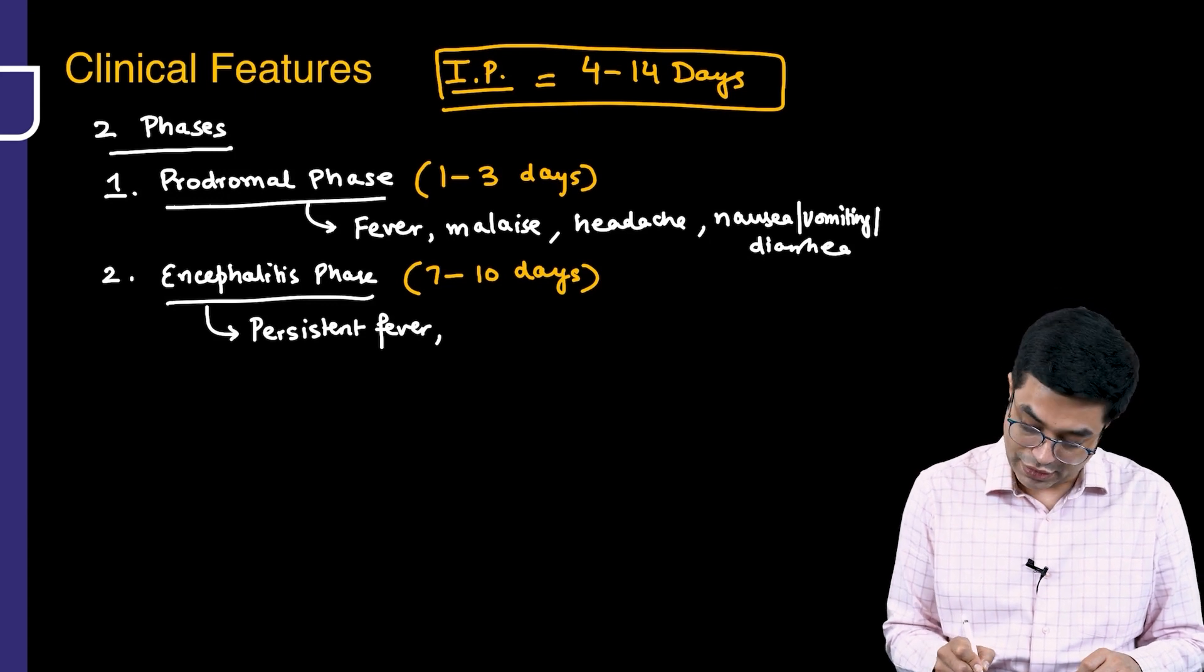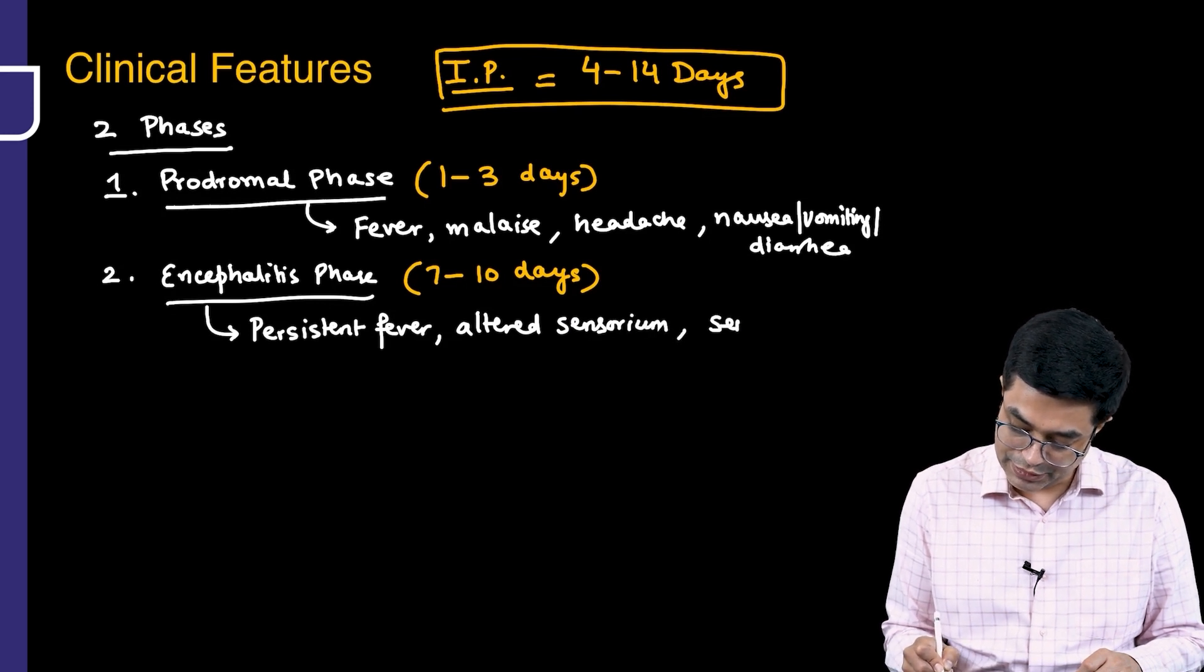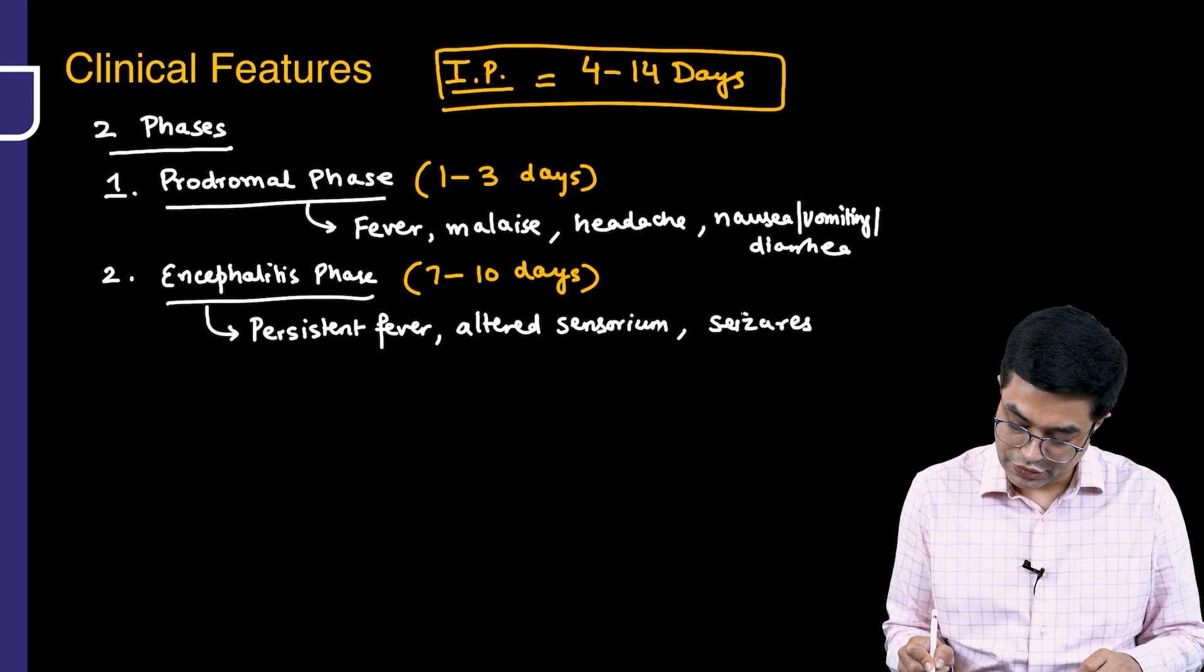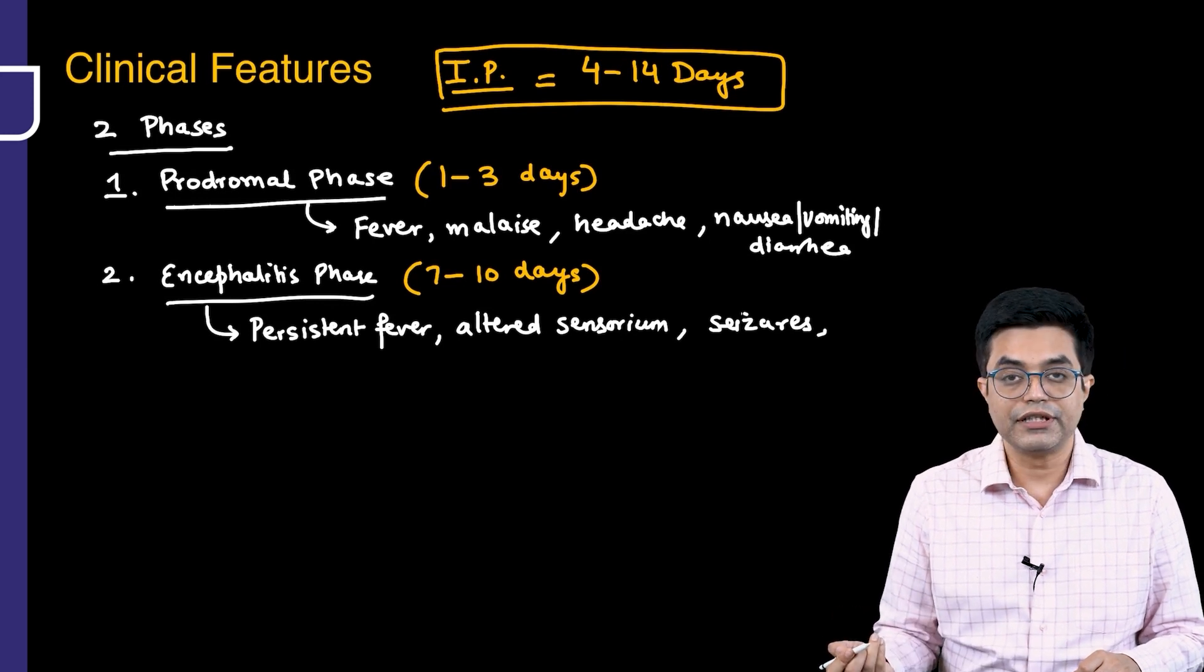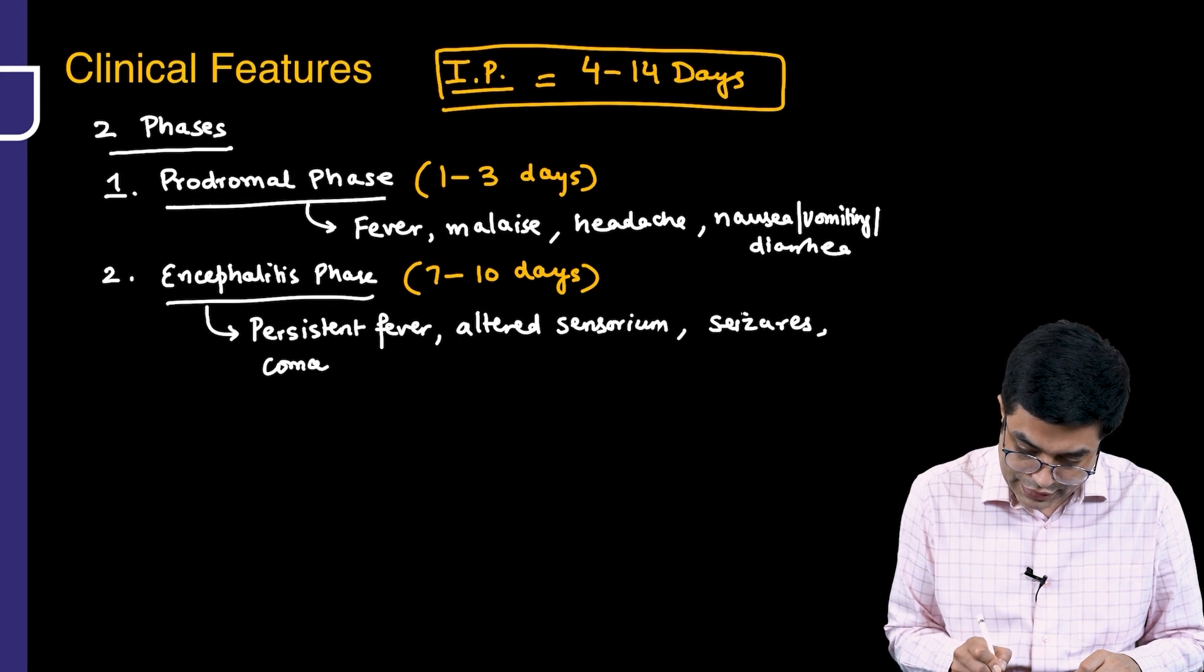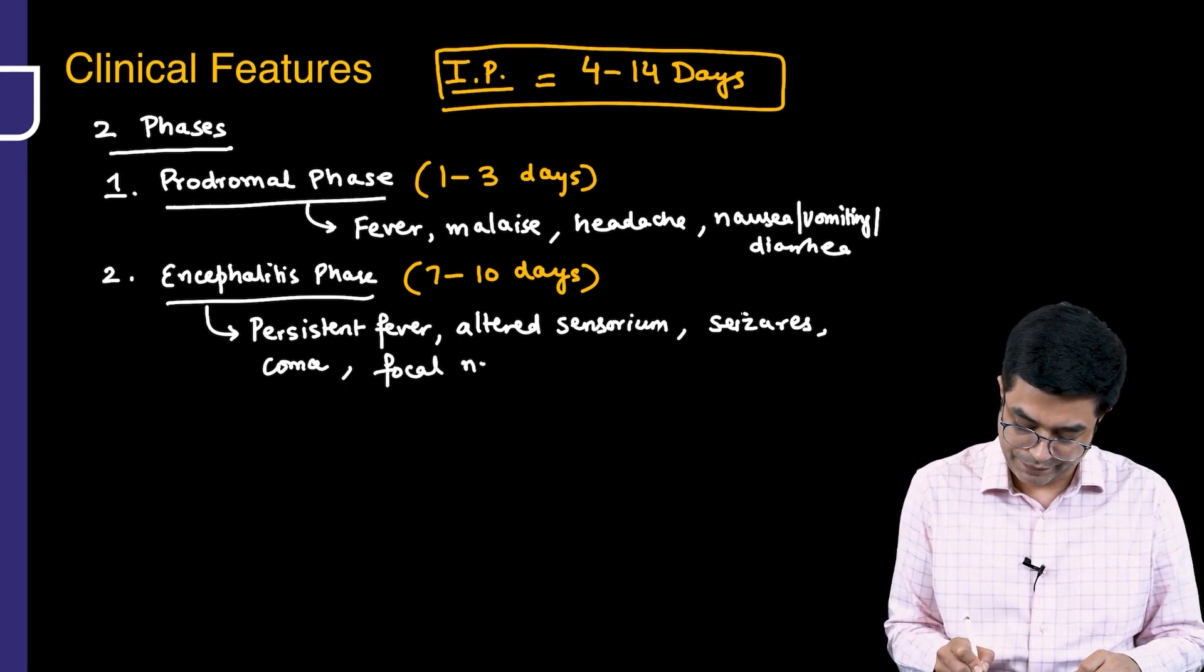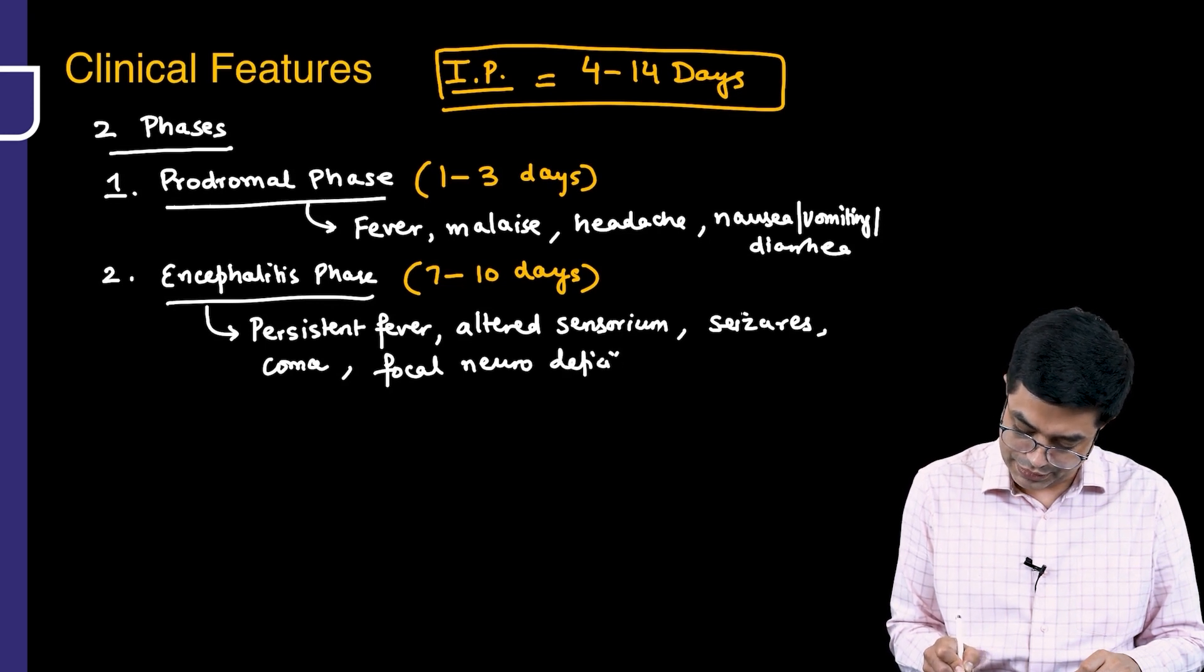Along with persistent fever, you will have altered sensorium, seizures developing in the patient, and progression of the disease producing coma-like features. Focal neurological deficits will also appear.